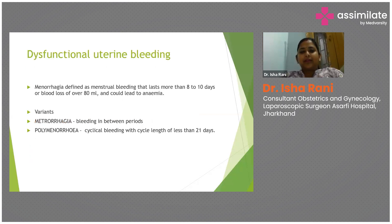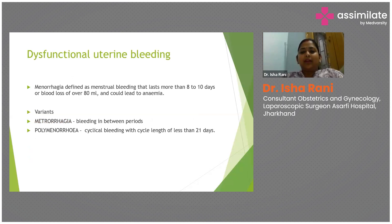Dysfunctional uterine bleeding was a very common term used previously. It was used to define any type of menorrhagia or abnormal uterine bleeding which was not cyclical, or if it was cyclical, where there was no identifiable organic cause.